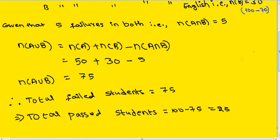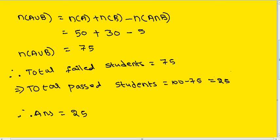Total passed students: total is 100, so 100 minus 75 equals 25. The answer is 25. Thank you for watching.